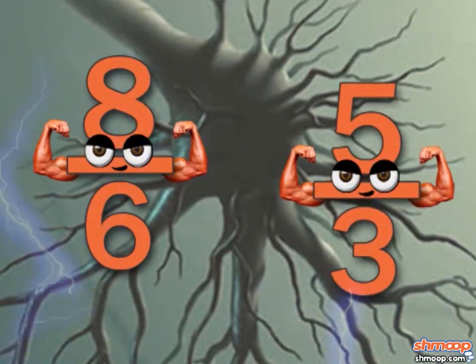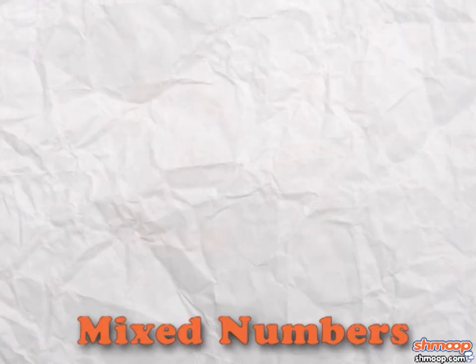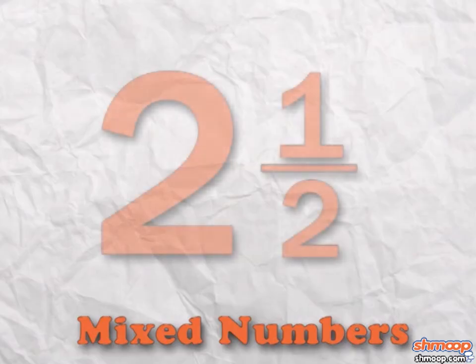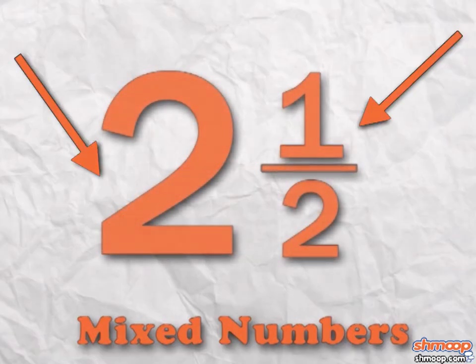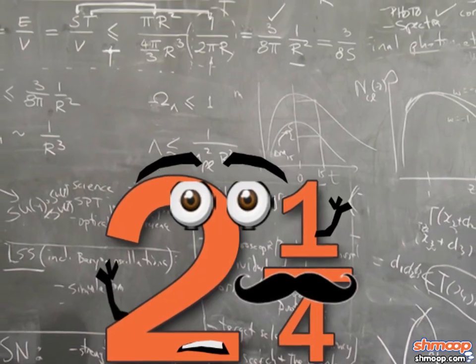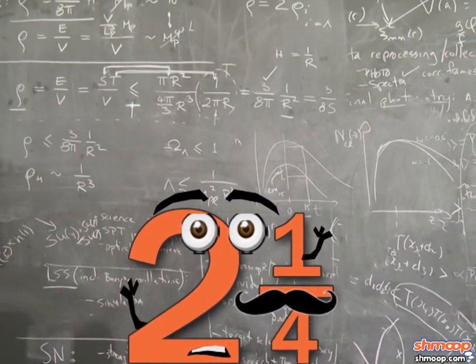But if they get on our nerves, we can change them into mixed numbers. Mixed numbers are combinations of whole numbers and fractions, so they may be a bit confused at times. Maybe they're going through an identity crisis or something. We don't really know.